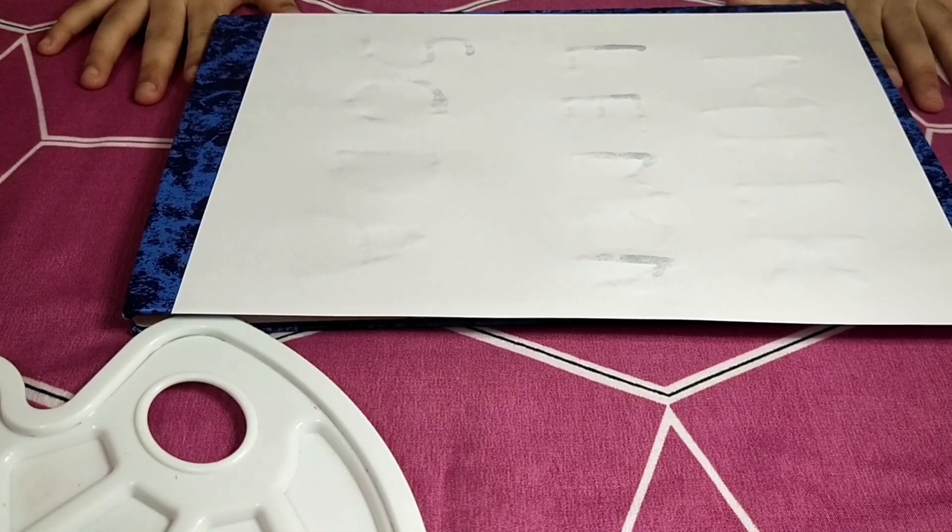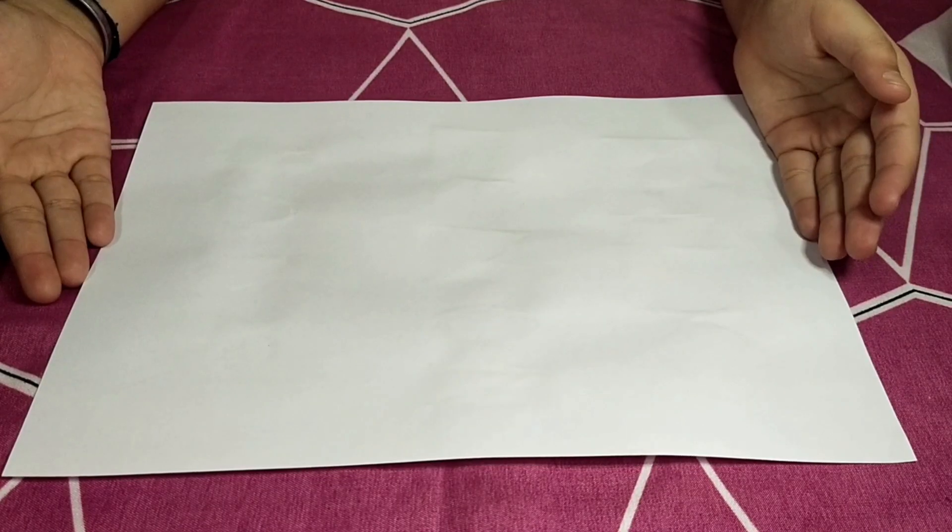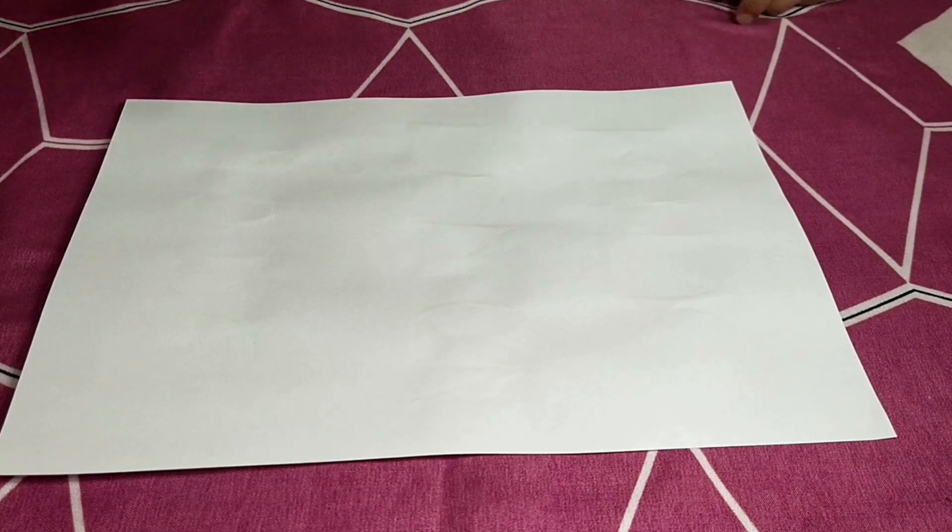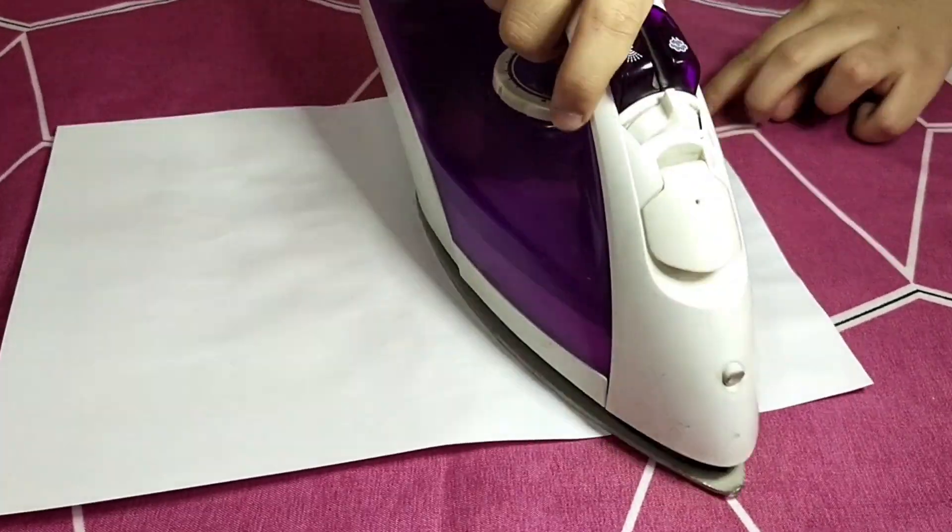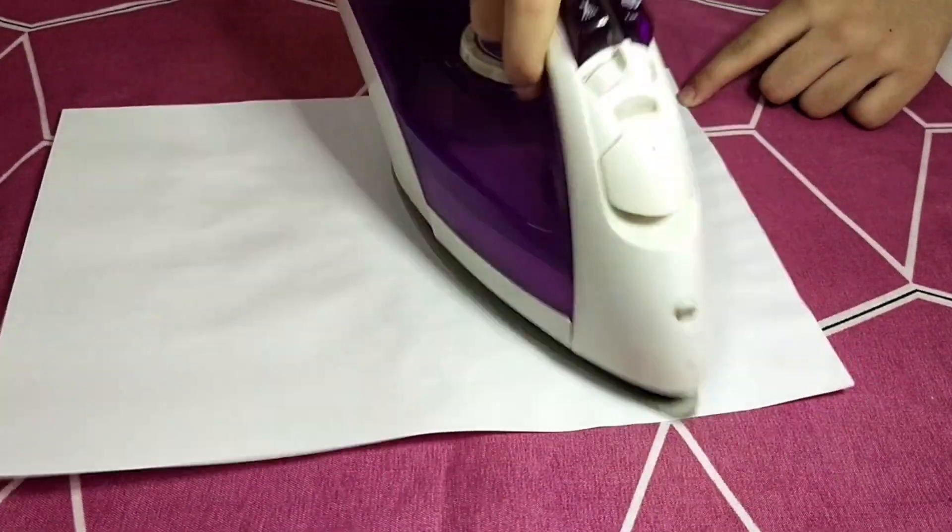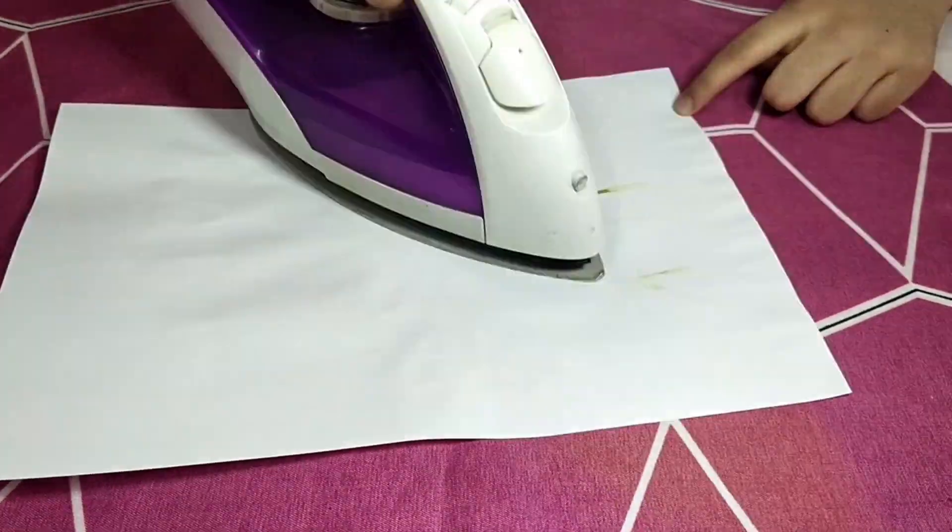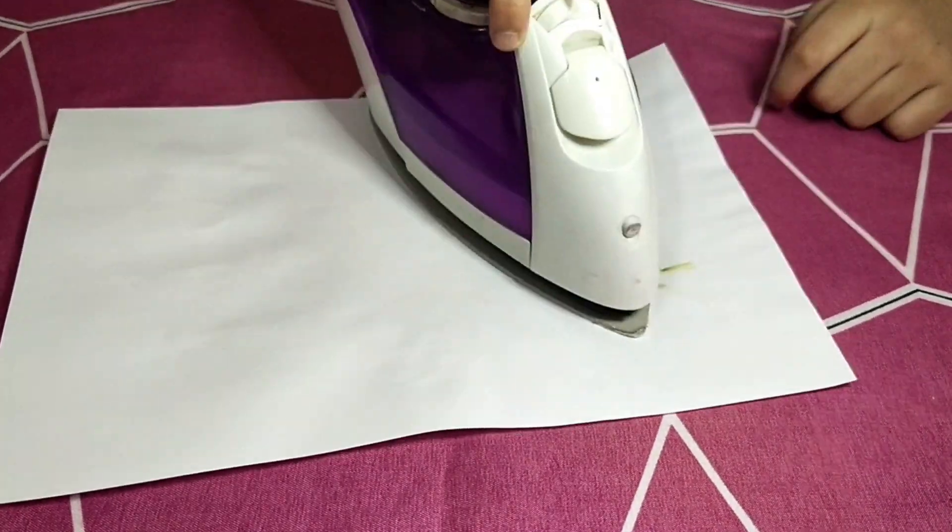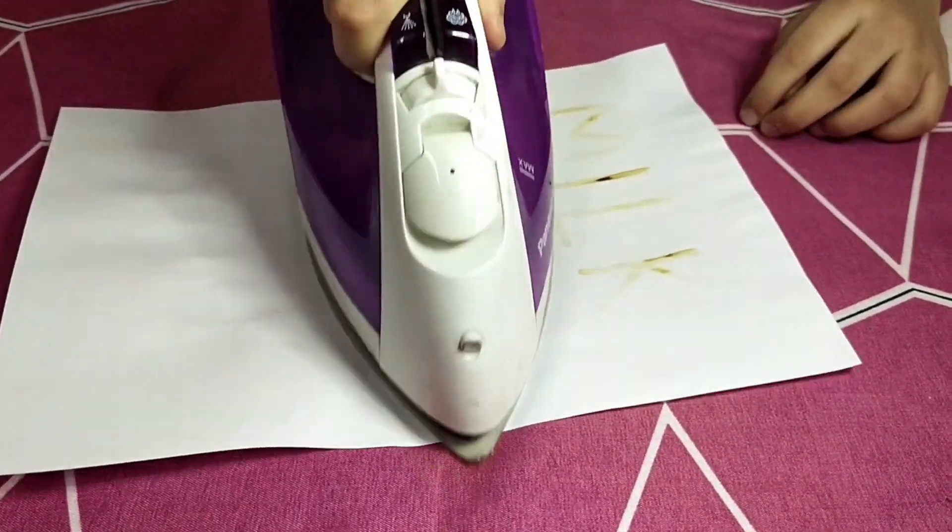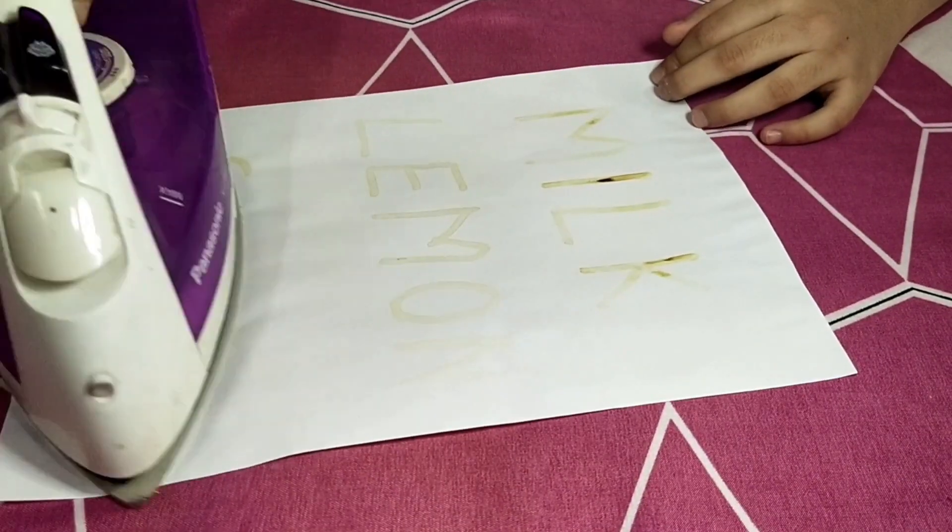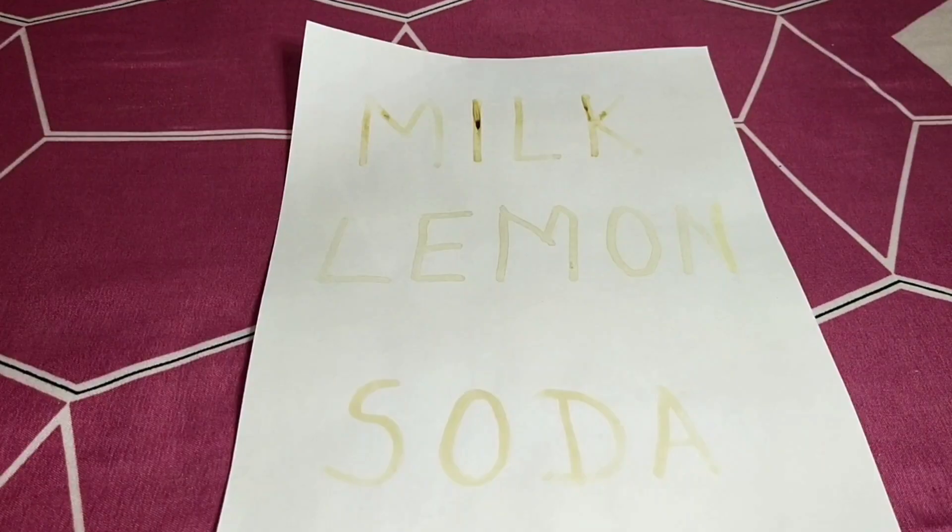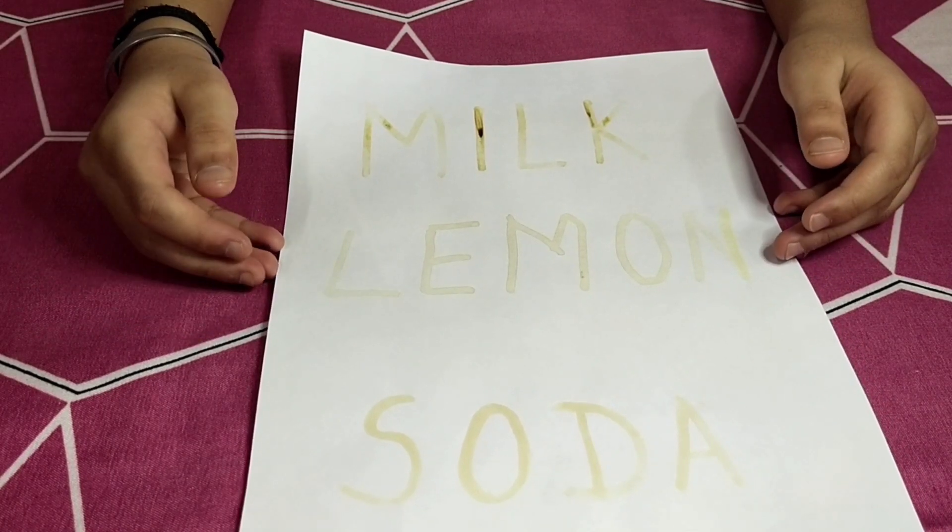Let it dry for some time. Now it's completely dried out. Now let's iron it to make it visible. When we apply heat to the messages written with milk and lemon, it gets oxidized and turns the message brown. The message written with baking soda slightly disrupts the cellulose fiber in the paper. When heat is applied, the damaged fiber burns and turns brown. Try this with your friends and have fun.